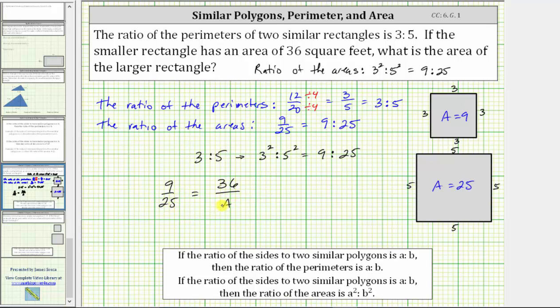Because these two ratios must be equivalent, notice that nine times four is equal to 36, which means to find the missing area, we multiply 25 by four. 25 times four is equal to 100. The missing area is equal to 100 square feet.